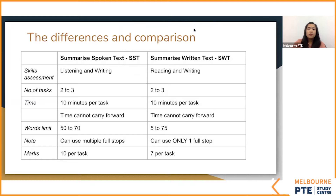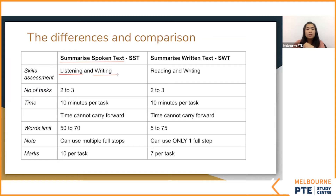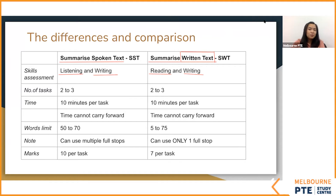What's the difference? For summarize spoken text, why is it called that? Because you need to listen to the audio, and after you listen, you have to write a summary. That is why it gives you marks for listening and writing. For summarize written text, you need to read the paragraph and then write a summary — so it gives you marks for reading and writing. In PTE, the name of the topic tells you what you need to do.